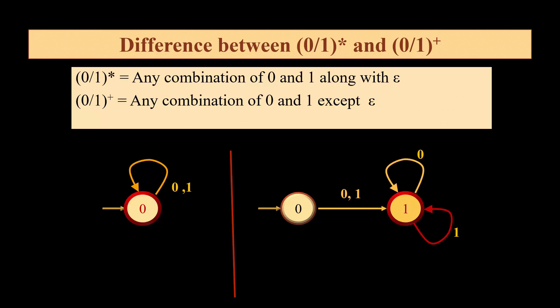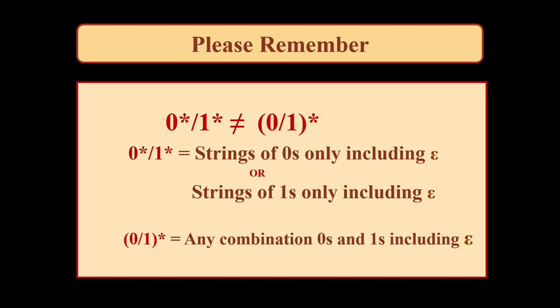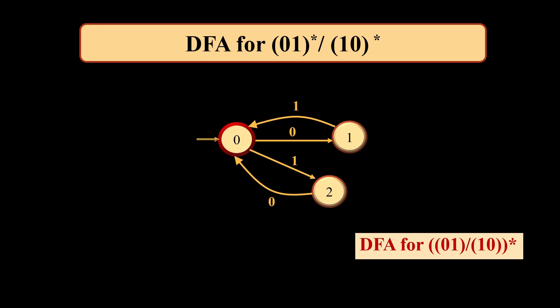Please remember: 0* or 1* is NOT equal to (0 or 1)*. The expression 0* or 1* means the string will have only zeros (including epsilon) or only ones (including epsilon), whereas (0 or 1)* means any combination of 0s and 1s including epsilon.